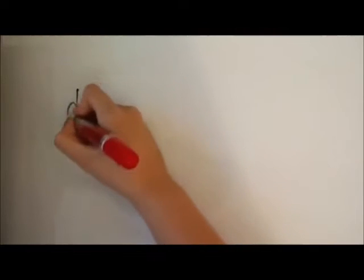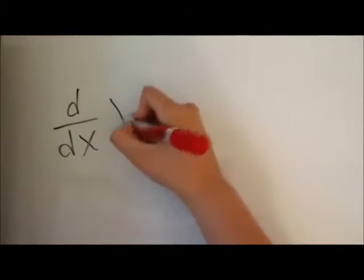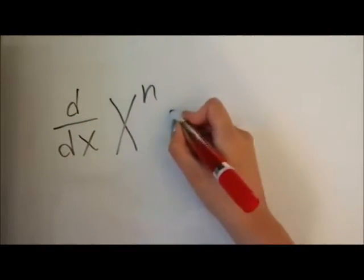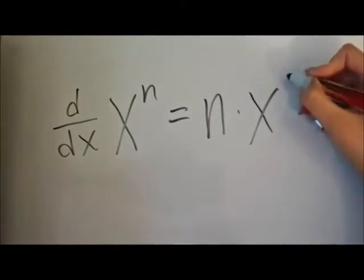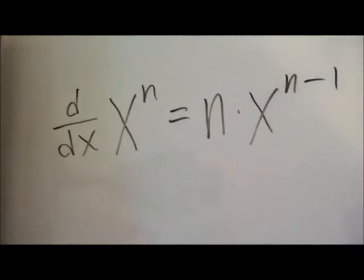So this is how the power rule works. Basically you're finding the derivative of x to the n, which is equal to n times x to the power of n minus 1.